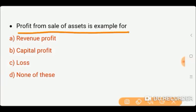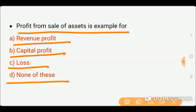Next question: Profit from sale of assets is an example of — options: revenue profit, capital profit, loss, or none of these. This is an example of capital profit. When we sell our assets, the profit from that sale is included in capital profit because assets are long-term items that help our business. So the correct answer is option B — capital profit.